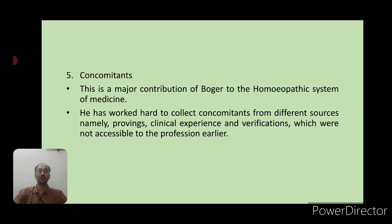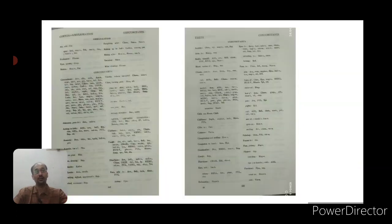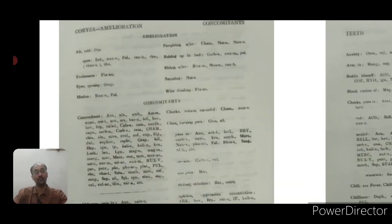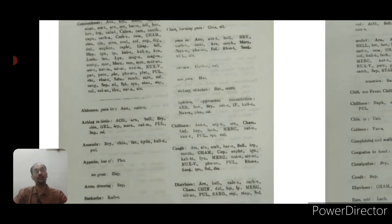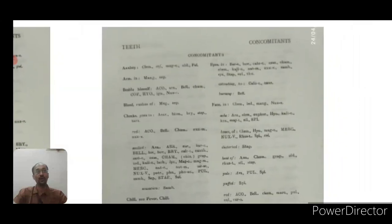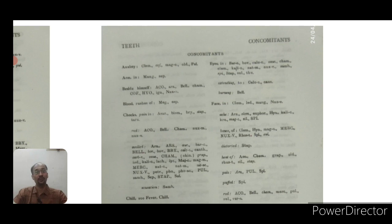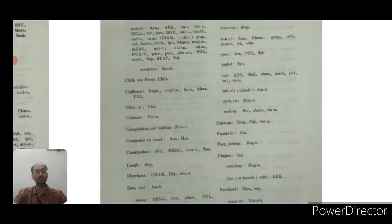The next important part is concomitants — this is the most controversial or confused entity in Boenninghausen and Boger's theory of totality of symptoms. In this repertory, Dr. Boger tried to rectify the error where concomitants were scattered in different chapters by forming a separate subsection on concomitants. In most chapters you will find the subsection of concomitants given very nicely. For example, in the chapter on nose coryza, we have general concomitants and specific concomitants. In the chapter on teeth, concomitants include anxiety, cheeks, chill, fever, and chill.